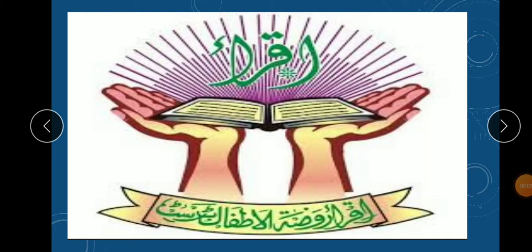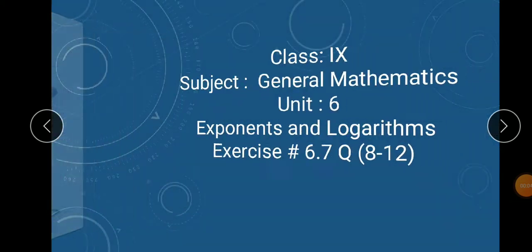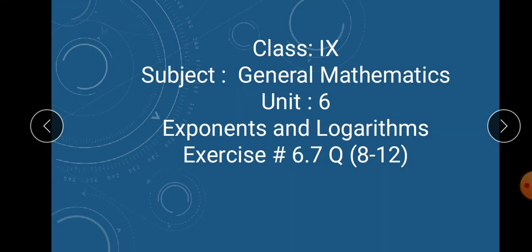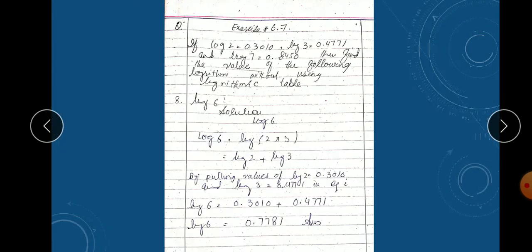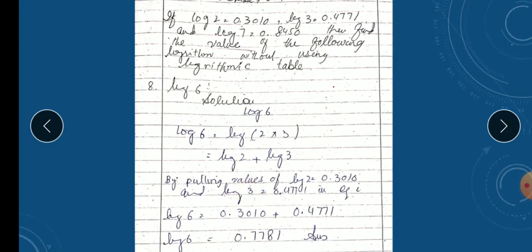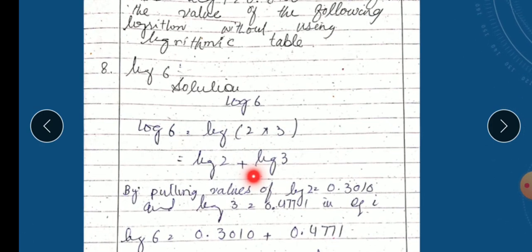Bismillahirrahmanirrahim, assalam alaikum students, welcome to online class. Class nine general mathematics, unit number six, exercise six point seven. Today we are doing questions eight to twelve. Starting now with question number six point seven eight. Log2 is equal to 0.3010, log3 is 0.4771, log7 is equal to 0.8450. Find the value of the following logarithm without using logarithm table.